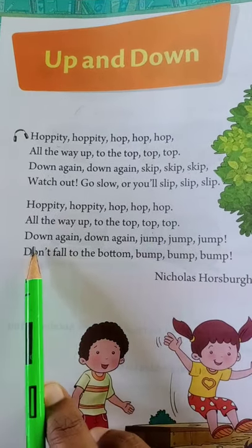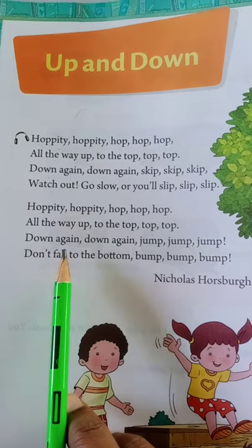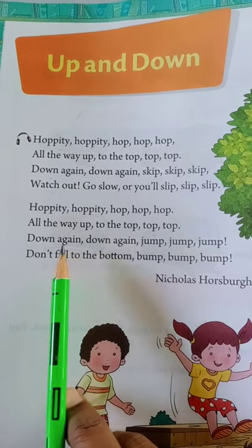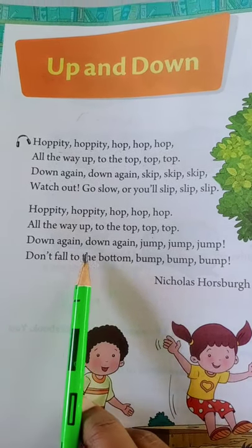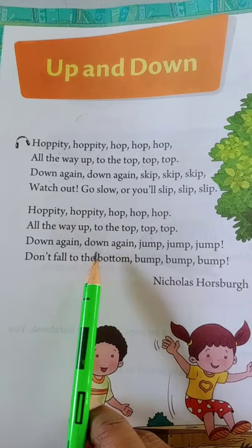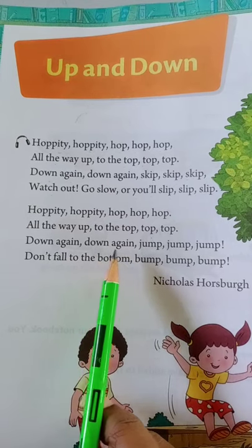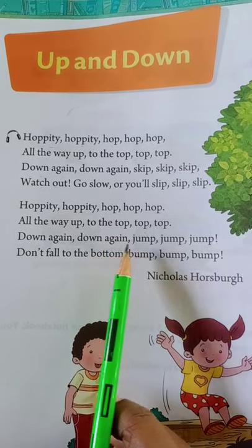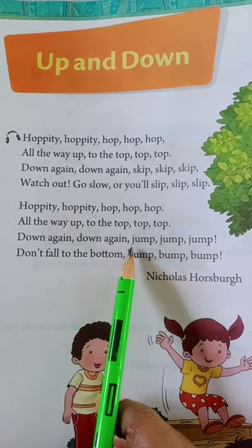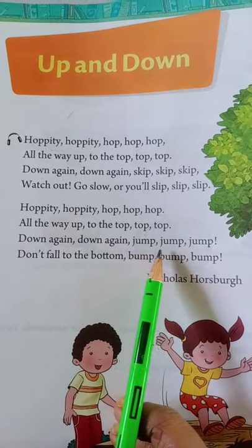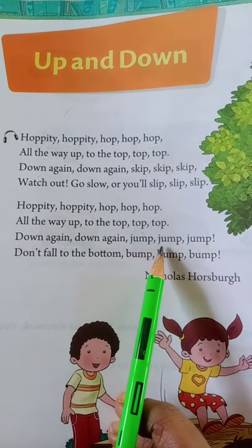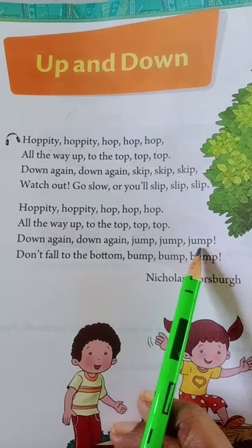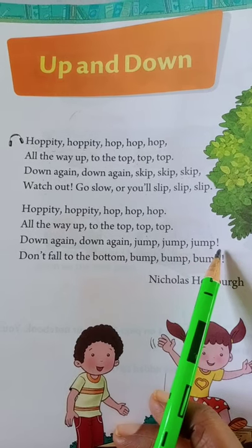D, O, W, N — Down. A, G, A, I, N — Again. D, O, W, N — Down. A, G, A, I, N — Again. J, U, M, P — Jump. J, U, M, P — Jump. J, U, M, P — Jump.